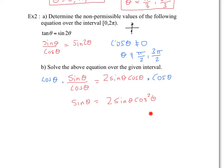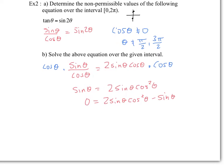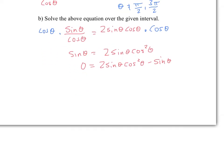Now I'm going to do something very similar — bring that to the other side. Any time you want to solve an equation, you always want equal to 0 on one side. So we have 2 sine theta cos squared theta minus sine theta equals 0. Similar to the last example, I'm going to factor the common factor of sine. This gives sine theta times (2 cos squared theta minus 1) equals 0.